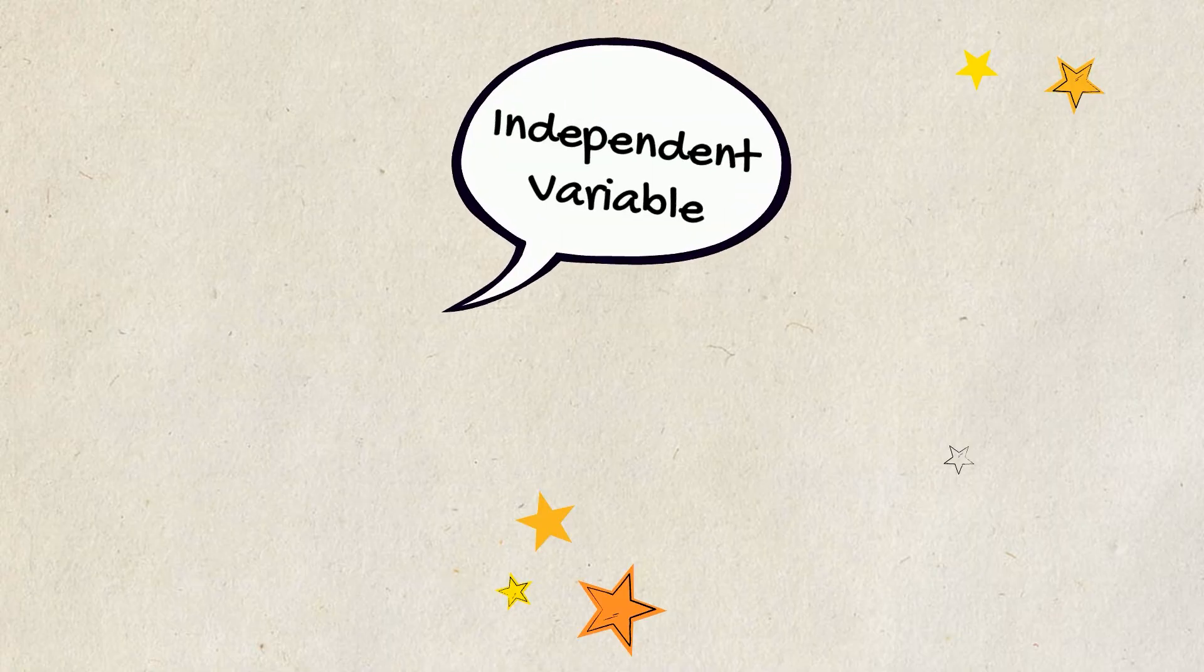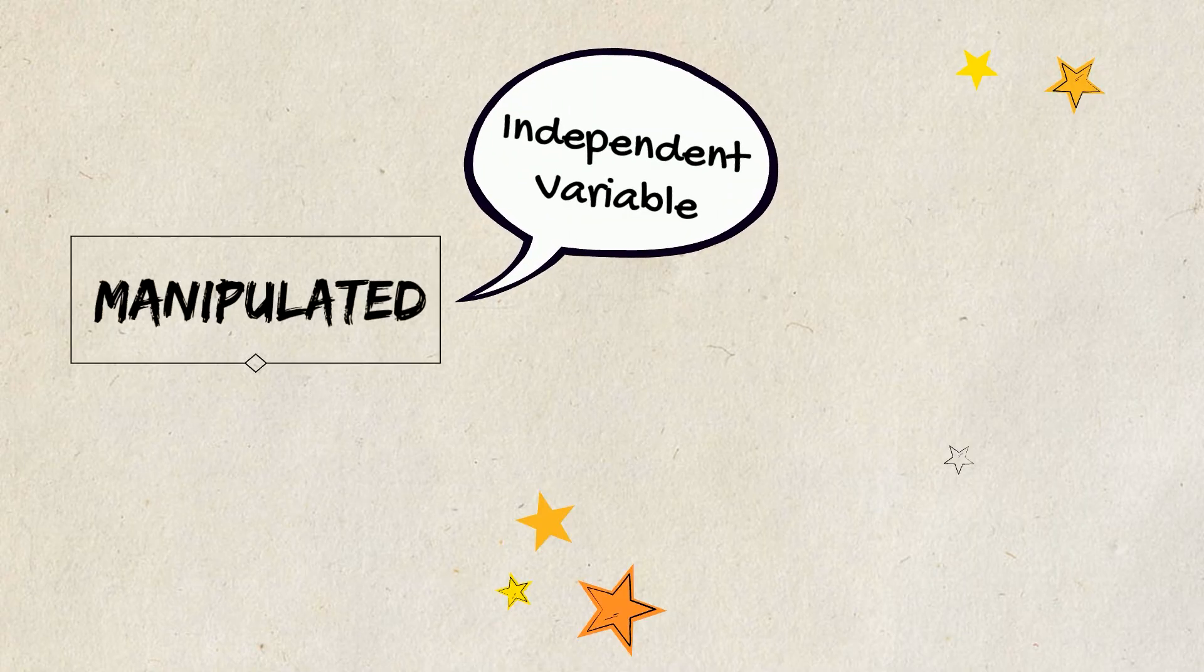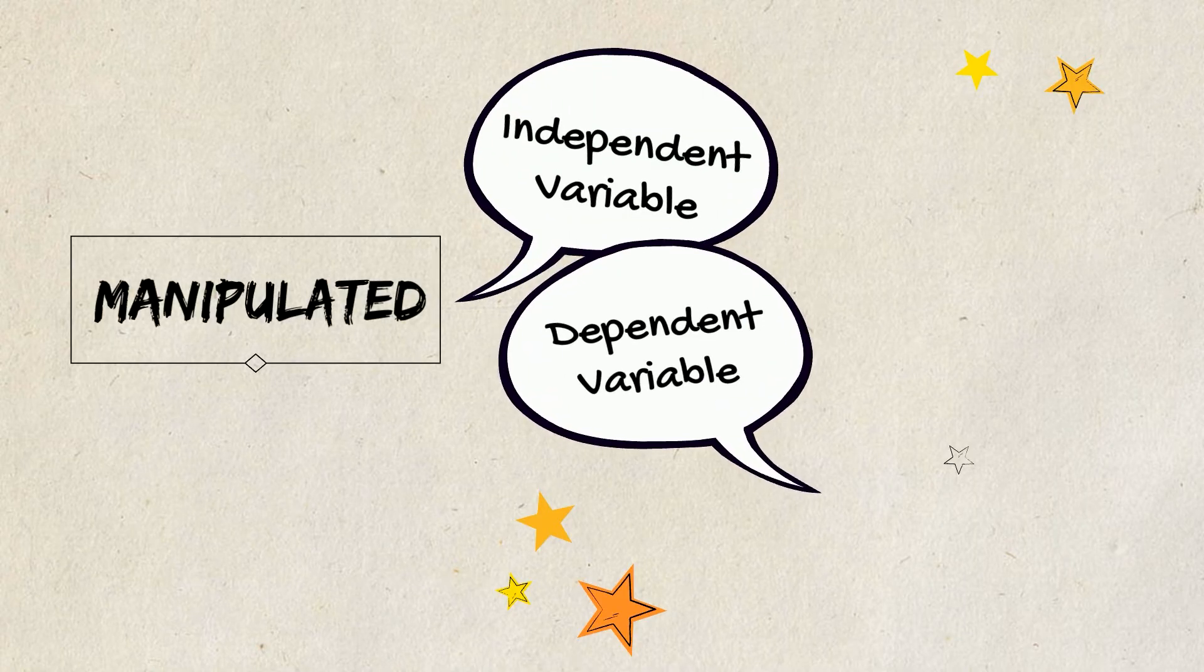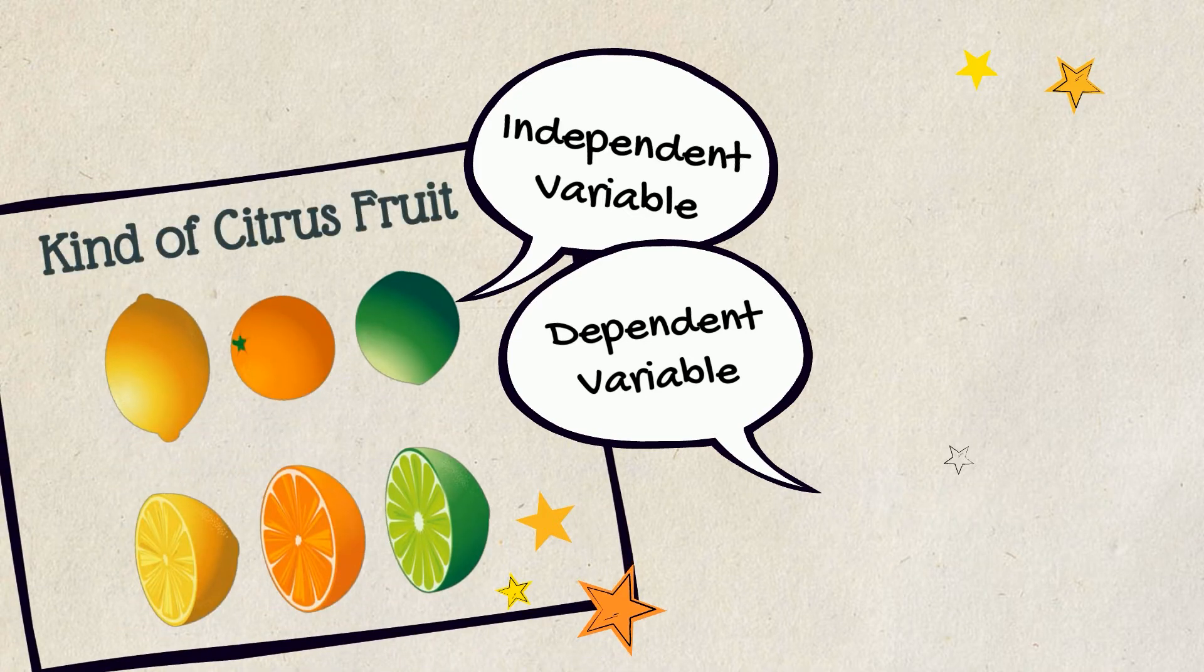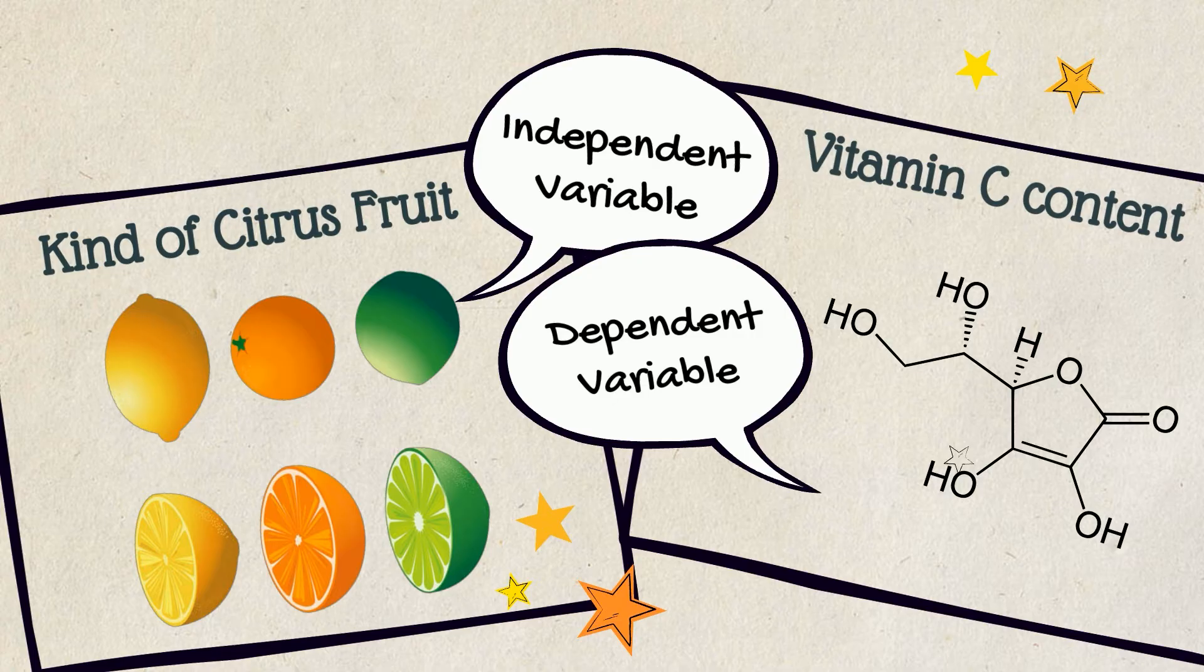The independent variable is the one being manipulated in the study, while the dependent variable is the one that responds to the changes in the independent variable. Going back to our example, our independent variable is the type of citrus fruit, while our dependent variable is the amount of vitamin C.